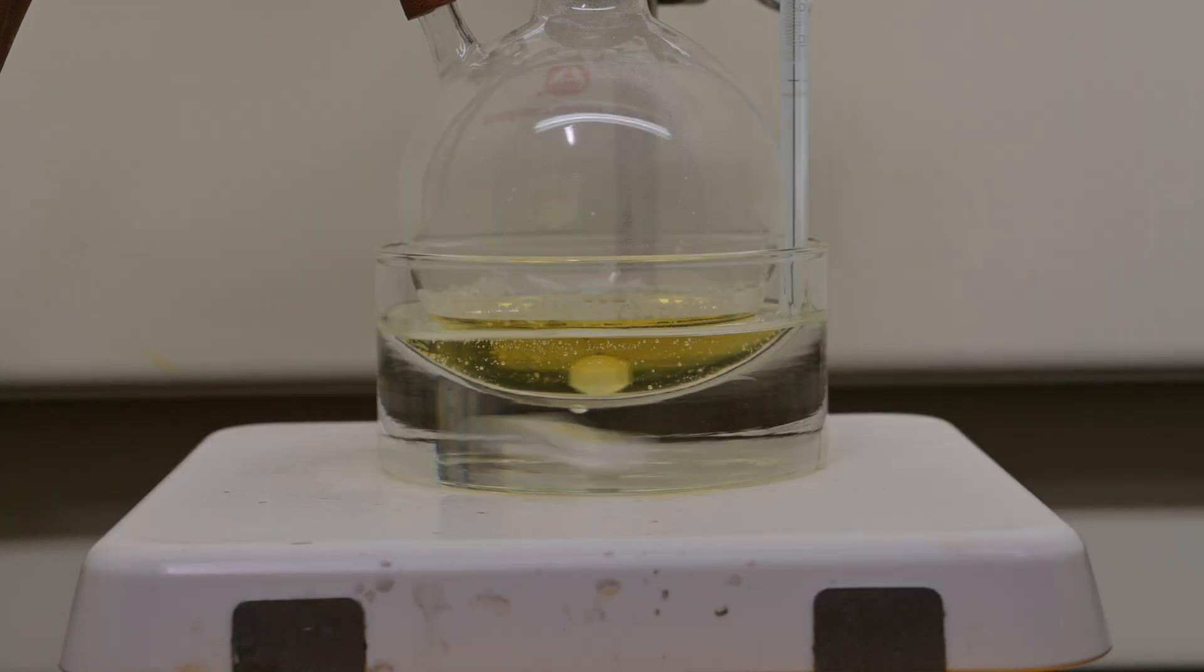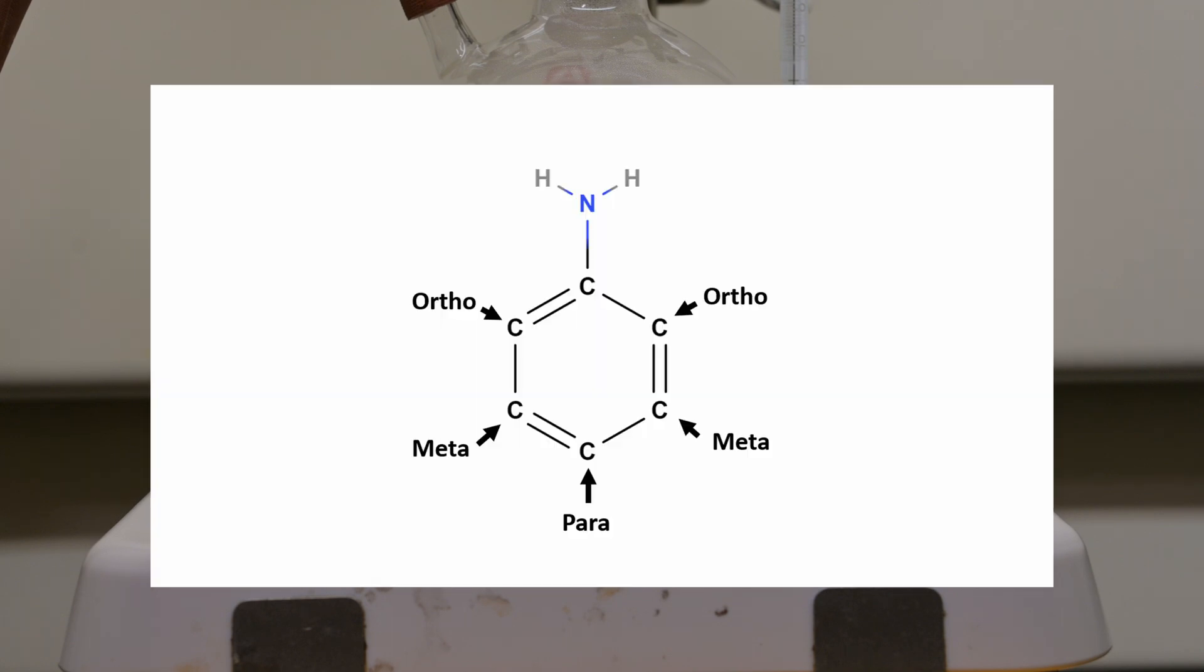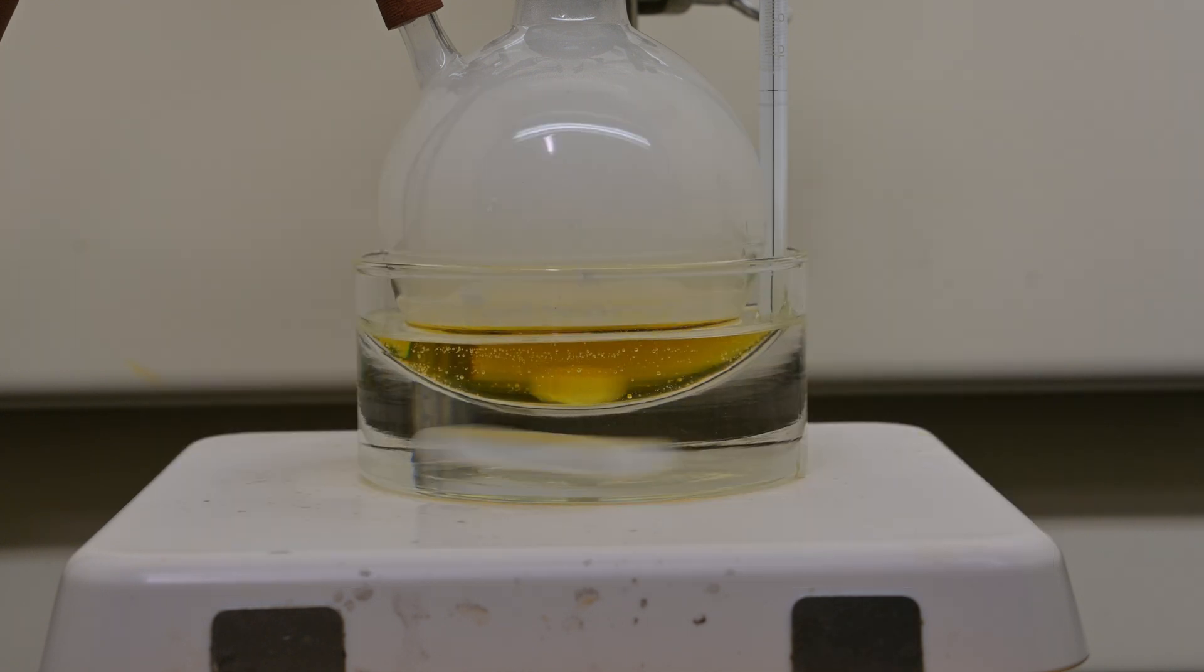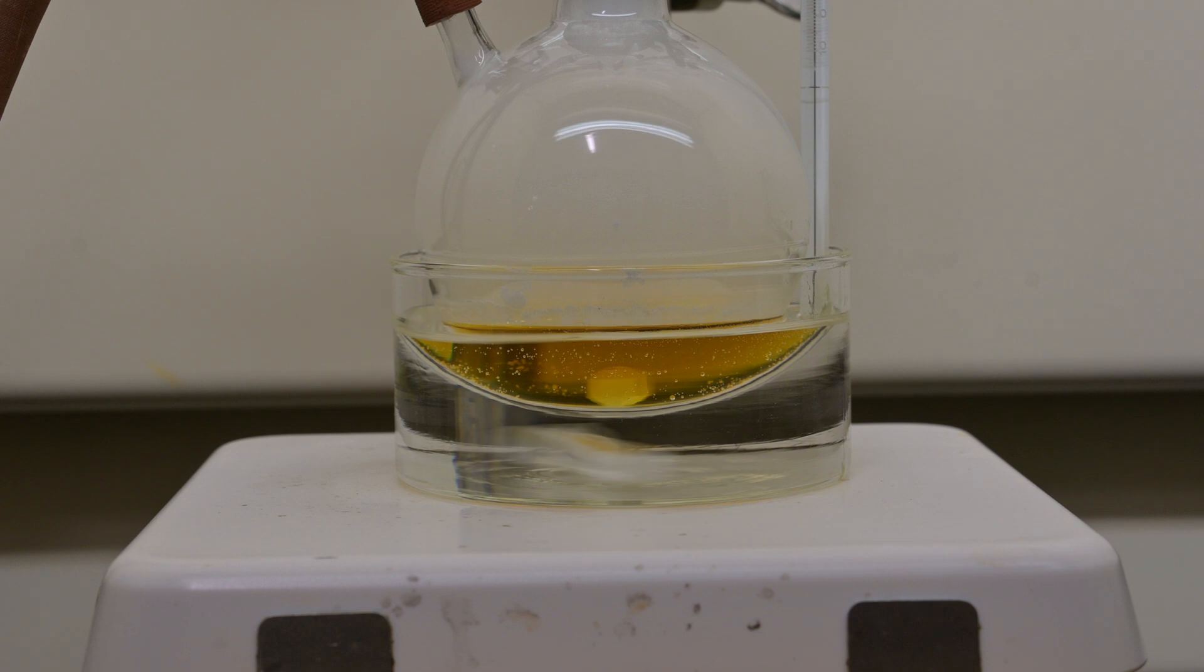In an aromatic compound with a single functional group, you have three positions the reaction can occur at: ortho, meta, and para. The functional group dictates which position the aromatic electrophilic substitution occurs. These are known as directing groups.